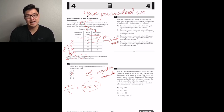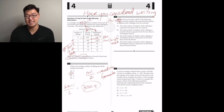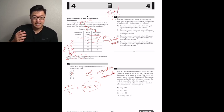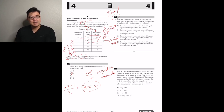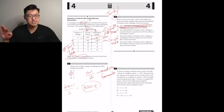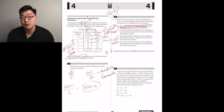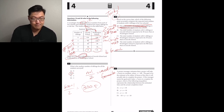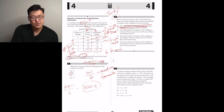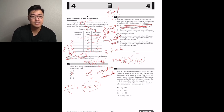Which most accurately compares the expected total number of students with four siblings at the two schools? This is question 20, so it requires more thought — answer A looks too easy. They have the same proportion: 10 out of 300 at each school have four siblings. But the total student counts differ — 2,400 at Lincoln gives 80, and 3,300 at Washington gives 110. Washington's total is larger, so the answer is B.